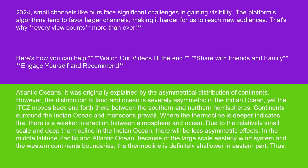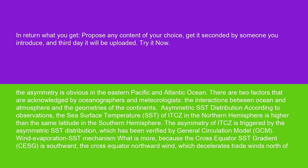In the mid-latitude Pacific and Atlantic Ocean, because of the large-scale easterly wind system and the western continent boundaries, the thermocline is definitely shallower in the eastern part. Thus, the asymmetry is obvious in the eastern Pacific and Atlantic Ocean. There are two factors acknowledged by oceanographers and meteorologists: the interactions between ocean and atmosphere, and the geometries of the continents.